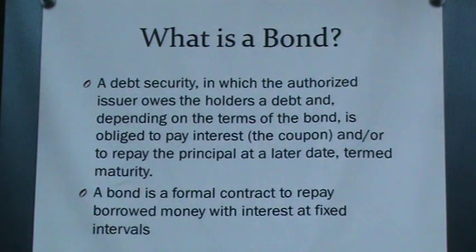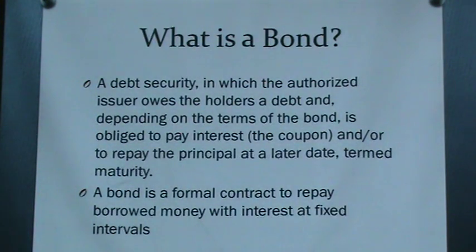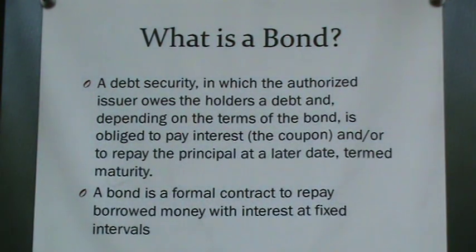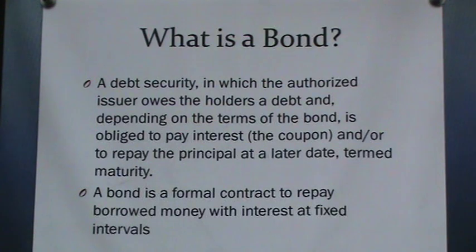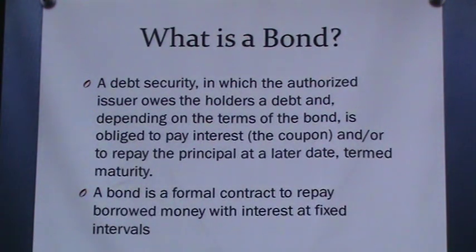So what is a bond? A bond is a debt security in which the authorized issuer owes the holders a debt and, depending on the terms of the bond, is obligated to pay an interest rate — called a coupon rate — and repay the principal at a later date, termed maturity. So there's a point in time where the agreement ends. Another definition: a bond is a formal contract to repay borrowed money over a fixed interval.